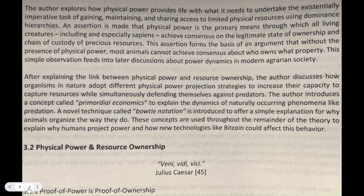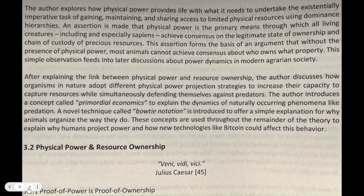This assertion forms the basis of an argument that without the presence of physical power, most animals cannot achieve consensus about who owns what property. This simple observation feeds into later discussions about power dynamics in modern agrarian society. After explaining the link between physical power and resource ownership, the author discusses how organisms adopt different physical power projection strategies to increase their capacity to capture resources while simultaneously defending themselves against predators. The author introduces a concept called primordial economics to explain the dynamics of naturally occurring phenomena like predation. A novel technique called bowtie notation is introduced to offer a simple explanation for why animals organize the way they do. These concepts are used throughout the remainder of the theory to explain why humans project power and how new technologies like Bitcoin could affect this behavior.